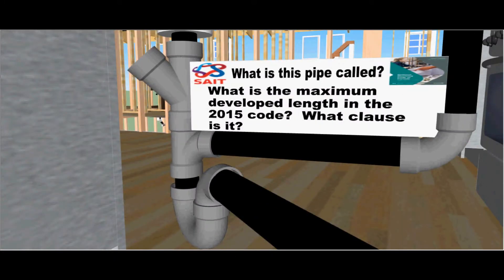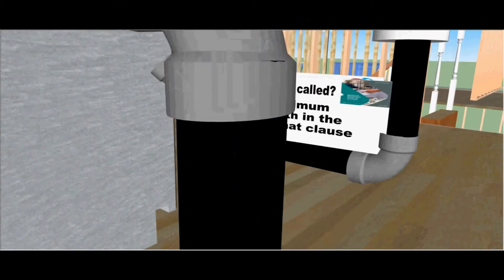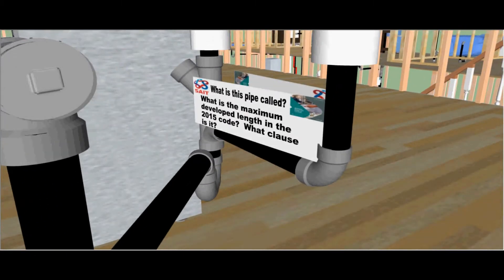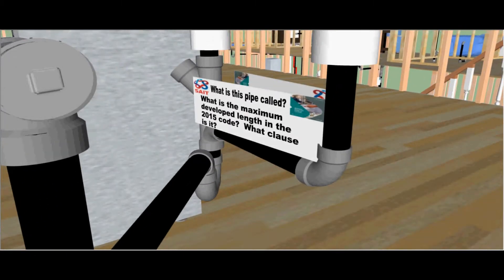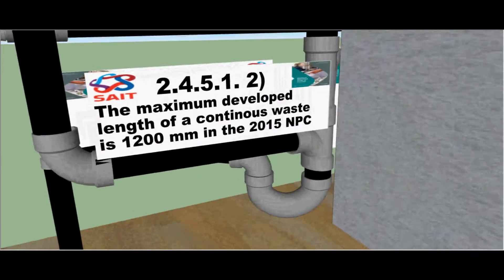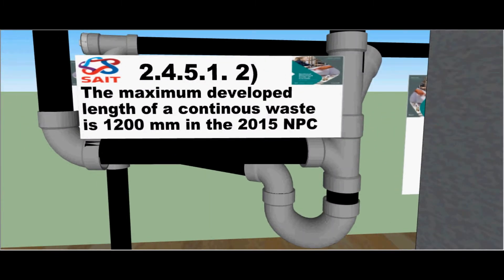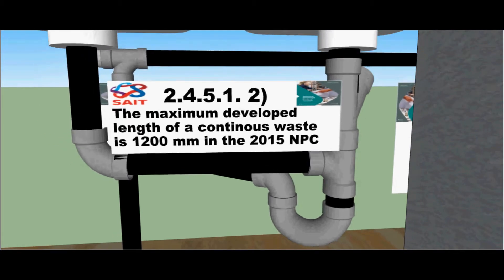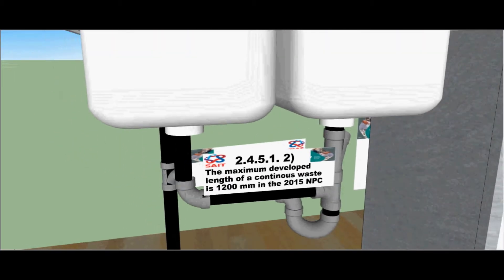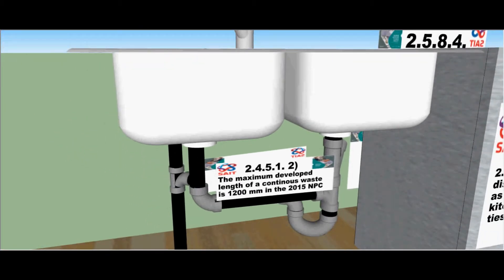What is this pipe called? What is the maximum developed length in the 2015 code? What clause is it? The maximum developed length of a continuous waste is 1200 millimeters in the 15 code. You can find it in clause 2451 subsection 2.